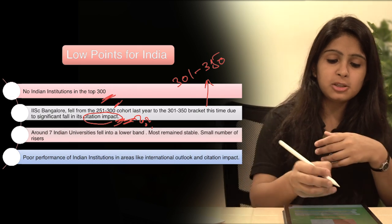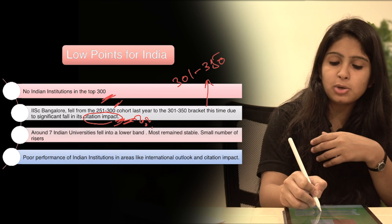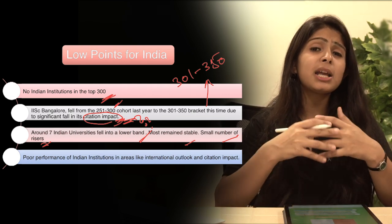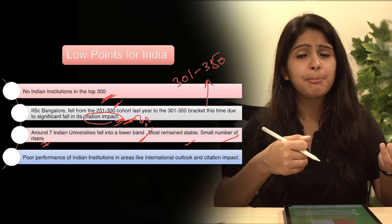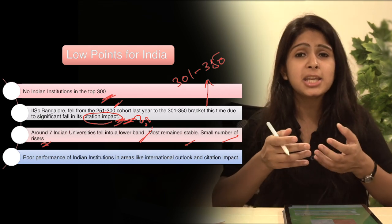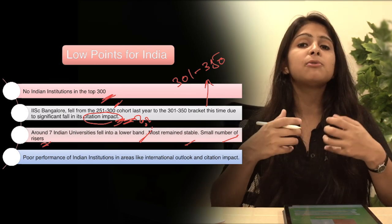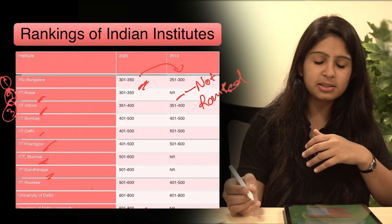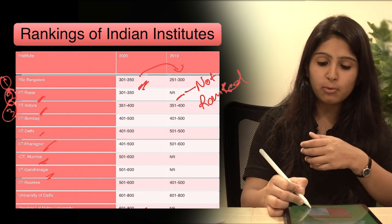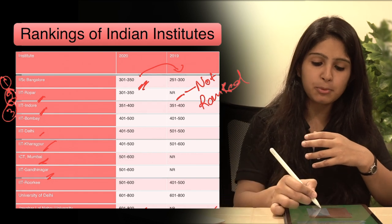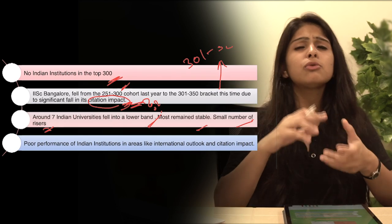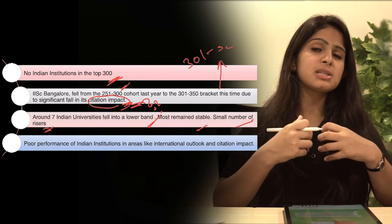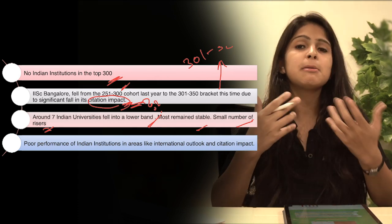So the next point for India is around seven universities fell into a lower band, most remained stable, and small number saw rises. So if we look at this list and see this ranking, we will know that around seven Indian universities' ranking has been reduced than their ranking last year. Maximum Indian universities are stable in their rankings which was last year, but there are some institutes whose ranking has improved. But maximum institutes' rankings have reduced this year, so this is bad news for India.